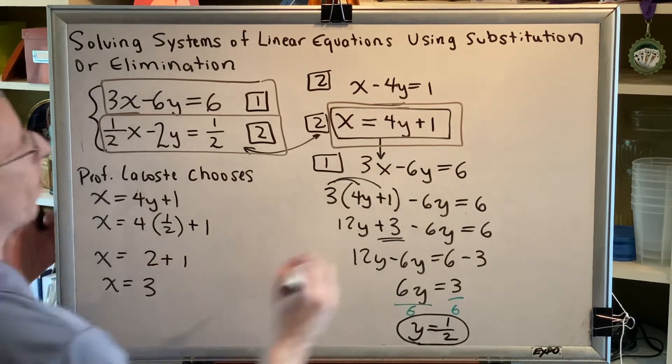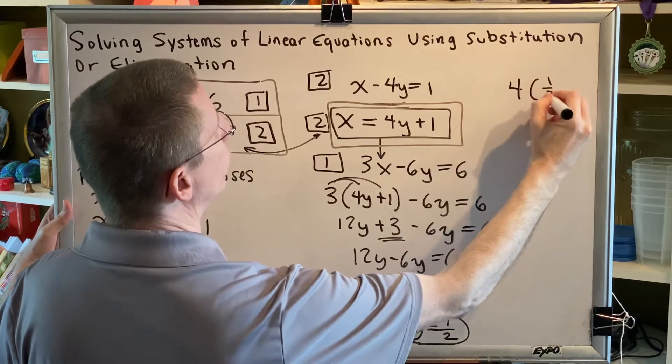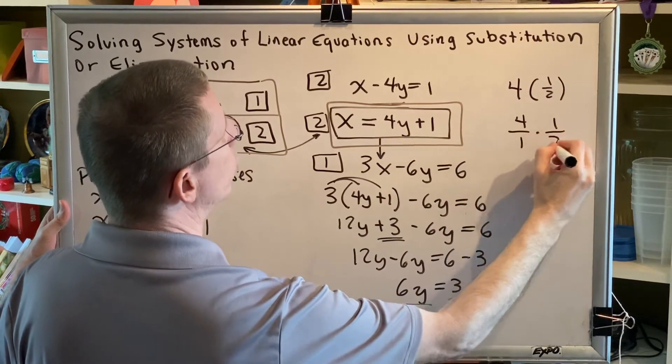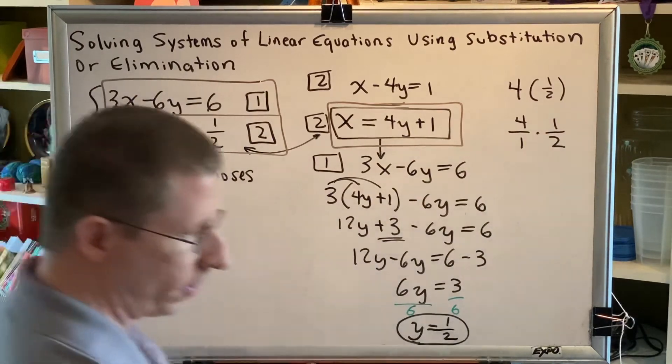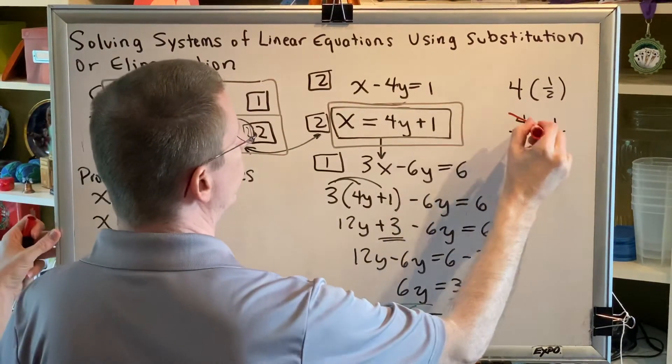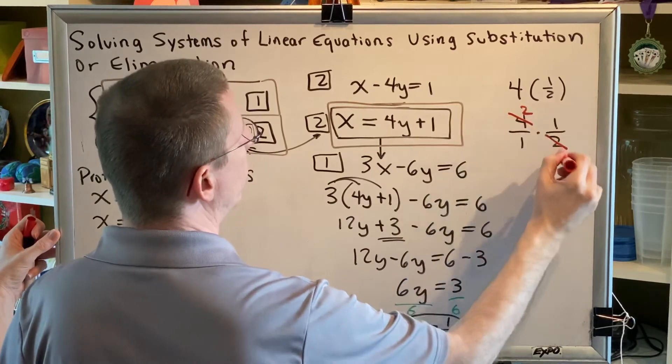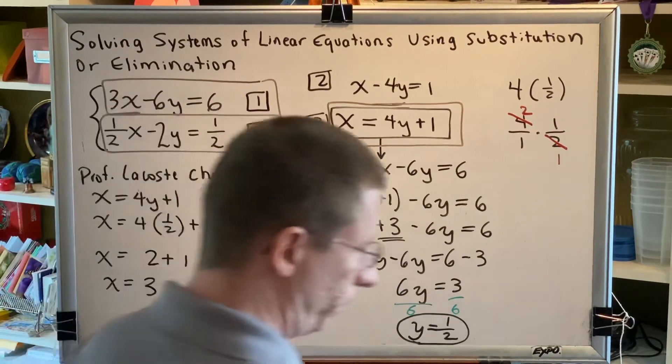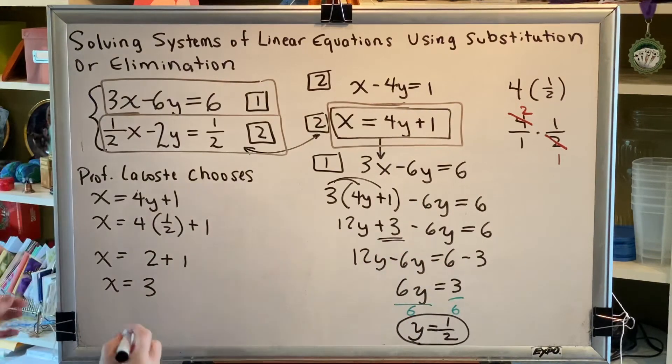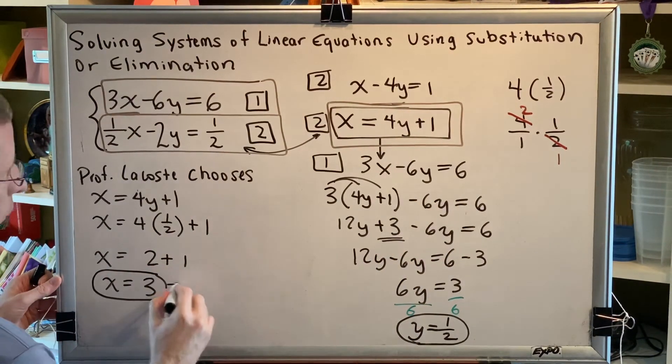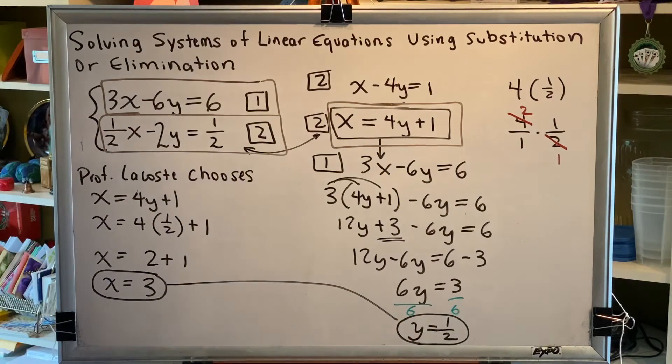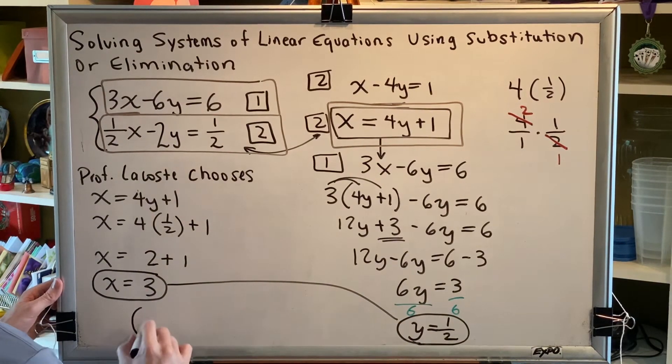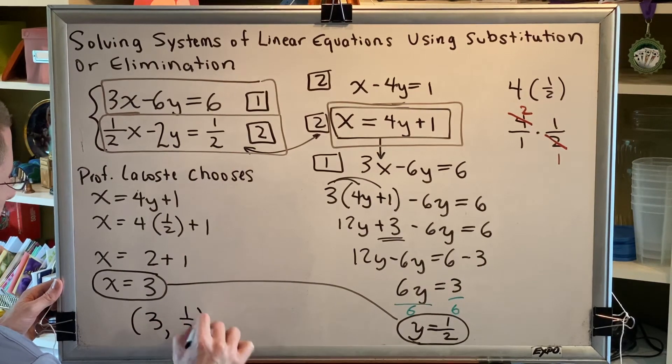Let's show our fraction math here. 4 times 1 half can be written as 4 over 1 times 1 over 2. The 4 divided by the 2 simplifies to 2, which we can write as 2 over 1. And 2 times 1 over 1 times 1 is simply the number 2. All right, so now we have a value for x and a value for y. We have found that there is one solution to this problem, and it is the ordered pair 3 comma 1 half.